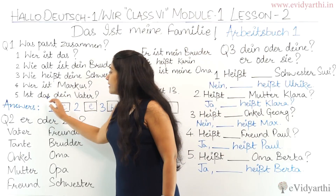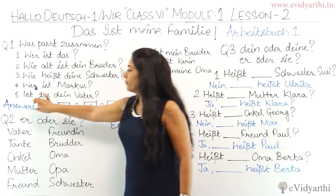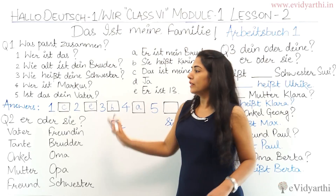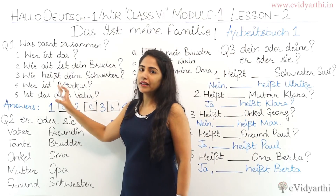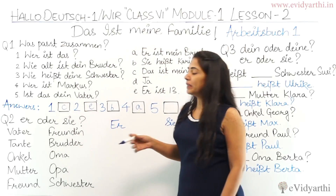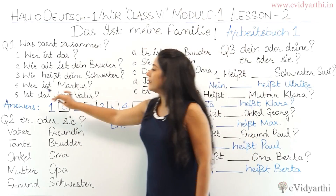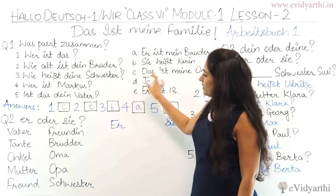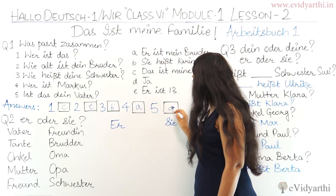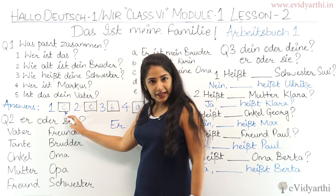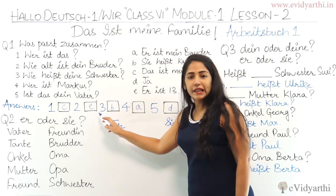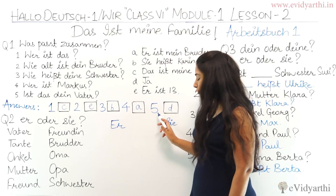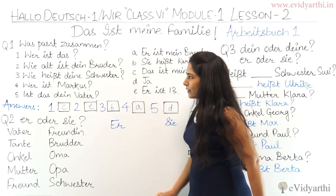Fifth: 'Ist das dein Vater?' — the verb is in first position and no question word is used, so this is a ja/nein question. The answer would be either yes or no. 'Ist das dein Vater?' — 'Is this your father?' — 'Ja,' yes. So number five is D. To summarize: 1-C, 2-E, 3-B, 4-A, 5-D. These are the answers for exercise one.